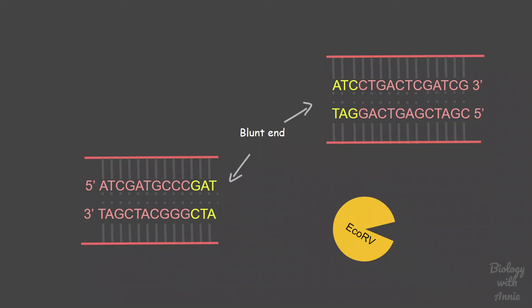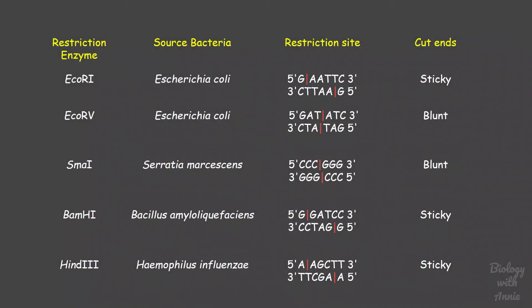Since their discovery, over 3000 restriction enzymes have been isolated from different species of bacteria. Each enzyme has a unique restriction site to which it binds and it produces either a sticky end or a blunt end. Here I have listed a few of them.